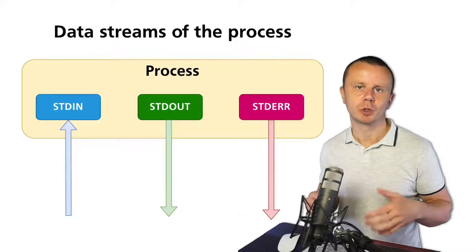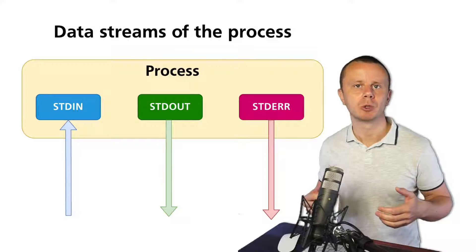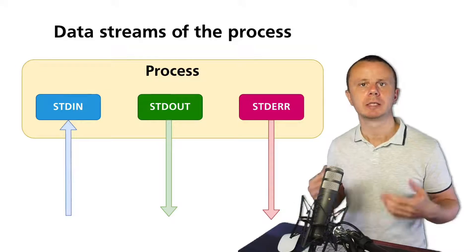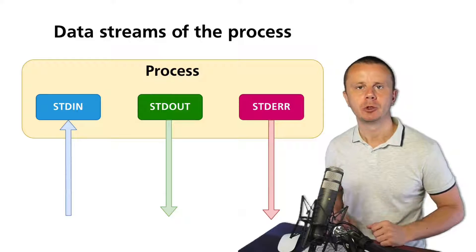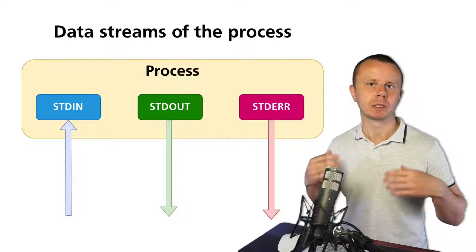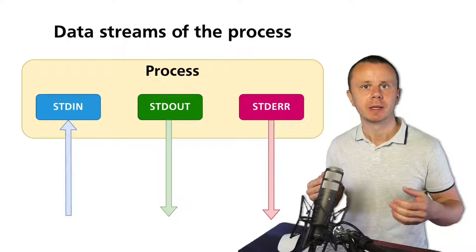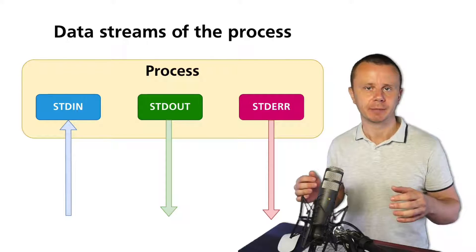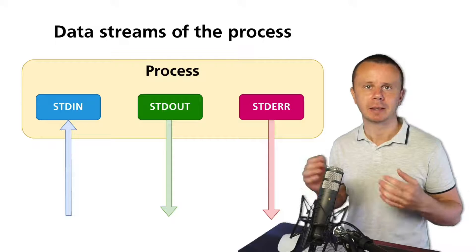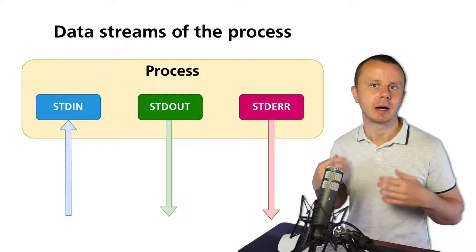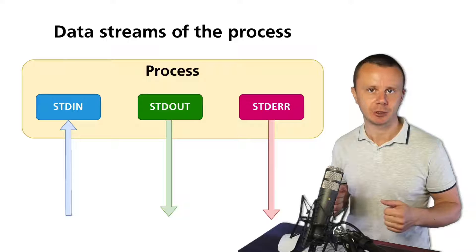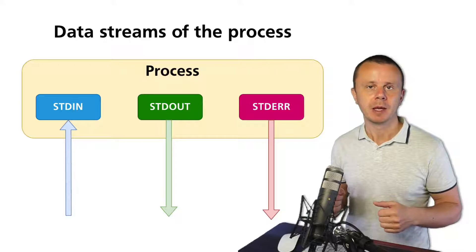Before, we talked about processes and you know how to use utilities such as ps, top, and htop. You know that when you enter any command along with possible options and arguments, a separate process is created. There were short-running processes like ls or mkdir, and long-running processes like bash. Now it's finally time to explain what data streams are for every process.